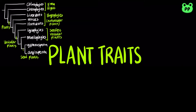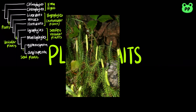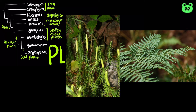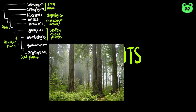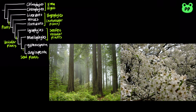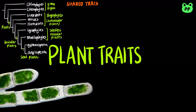The earlier vascular plants are seedless and include lycophytes and monilophytes. Lastly, seed plants include gymnosperms and angiosperms, which are flowering plants. Land plants share five main traits with green algae.